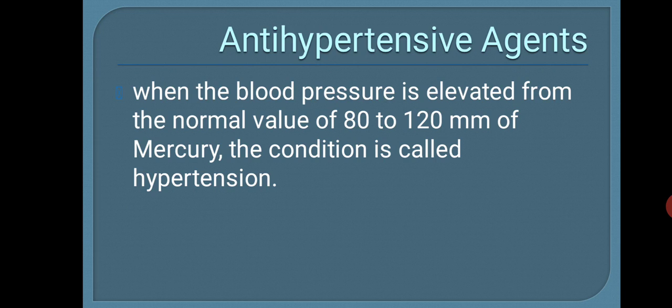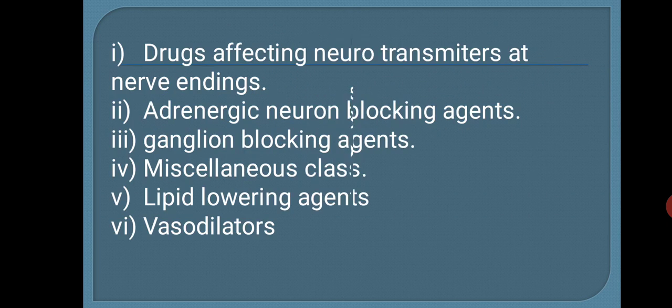The drugs we use in treatment of hypertension are what we are going to study. These classes are: drugs affecting neurotransmitters at nerve endings, adrenergic neuron blocking agents, ganglion blocking agents, miscellaneous classes, lipid lowering agents, and vasodilators. Today we will cover the first class — drugs affecting neurotransmitters at nerve endings.